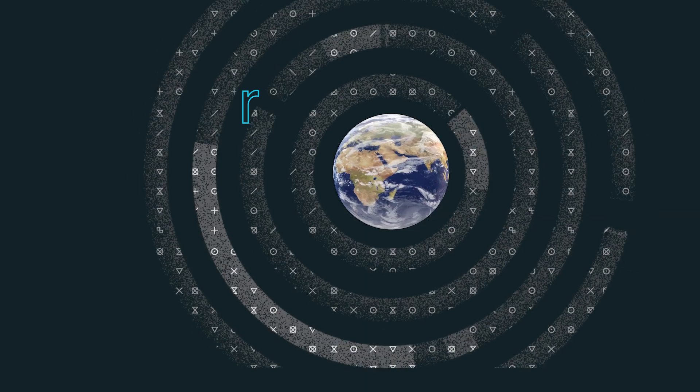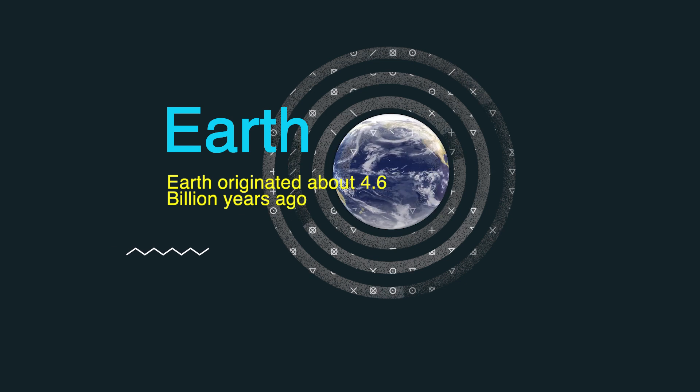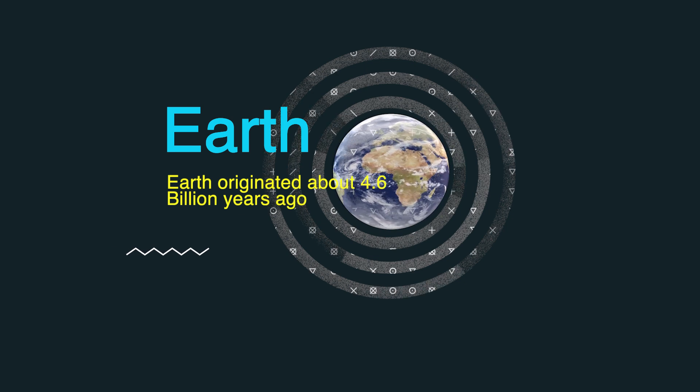Our earth, which is one of the planets of the solar system, originated 4.6 billion years ago. Our earth is so old! Not only the earth, but all the planets of our solar system were formed during the same time.